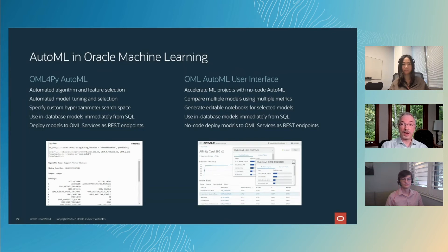The AutoML UI allows users to generate editable notebooks for selected models that show the specific hyperparameters chosen by AutoML using the OML for Python API. Like OML for Python, models can be used immediately from SQL and easily deployed to OML Services with just a few clicks.